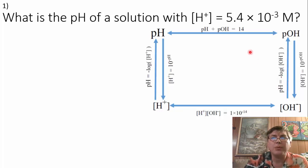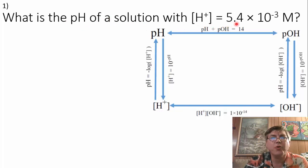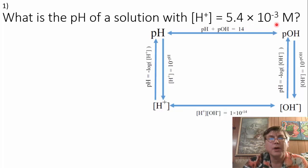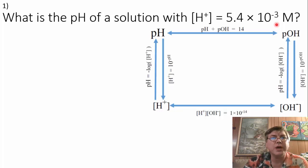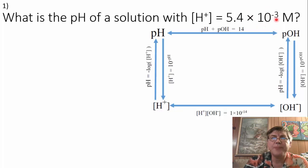Example problem number one says: what is the pH of a solution with a hydrogen ion concentration of 5.4 times 10 to the negative 3 moles per liter? The first thing we ought to do is look at some rules of thumb to help us decide approximately what our pH should be, and that's pretty easy to do if we look at this power right here — 10 to the negative 3.